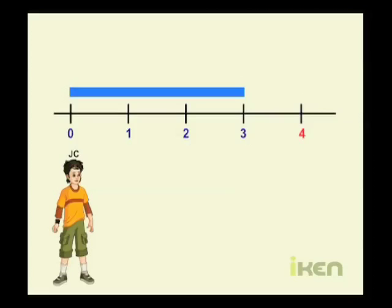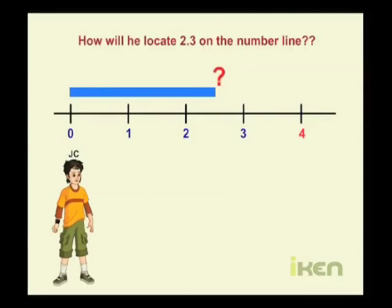But how does he locate decimals? Like, for example, how will he locate 2.3 on the number line?